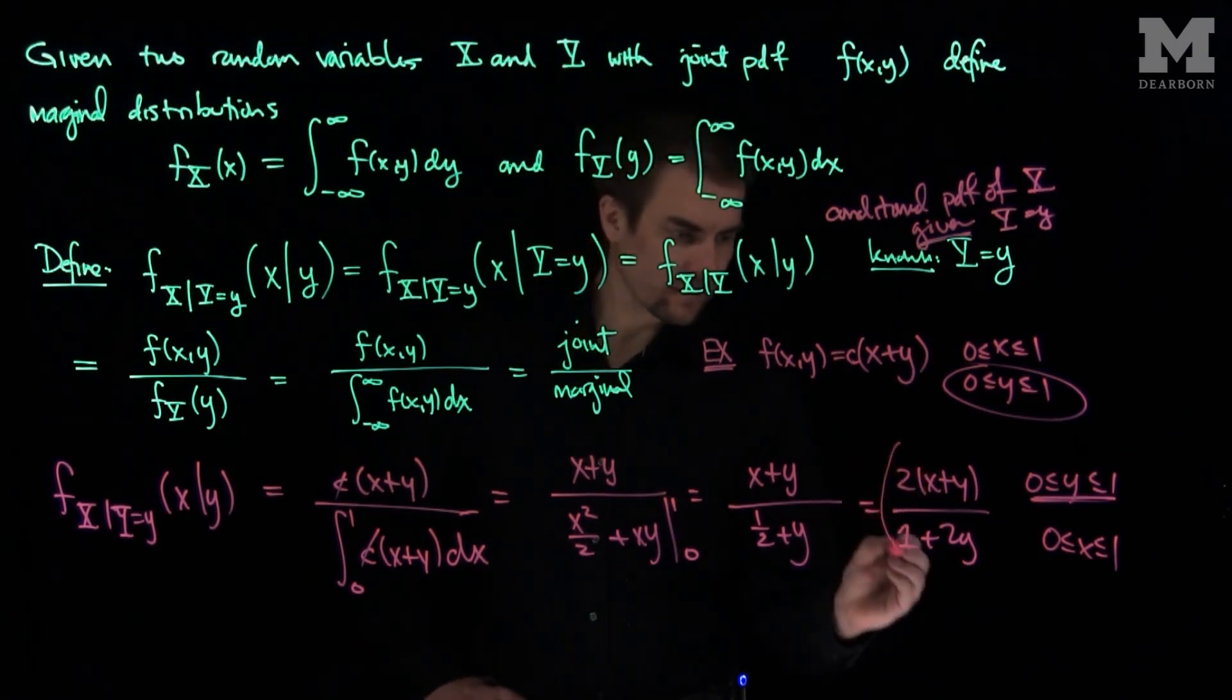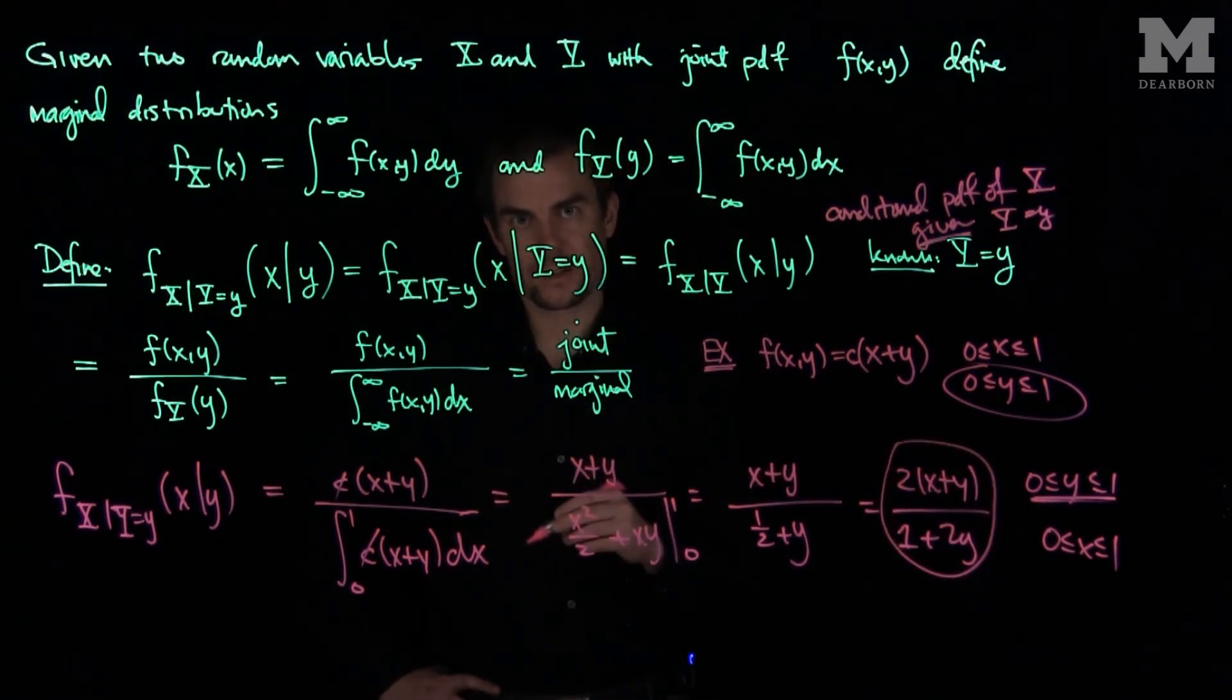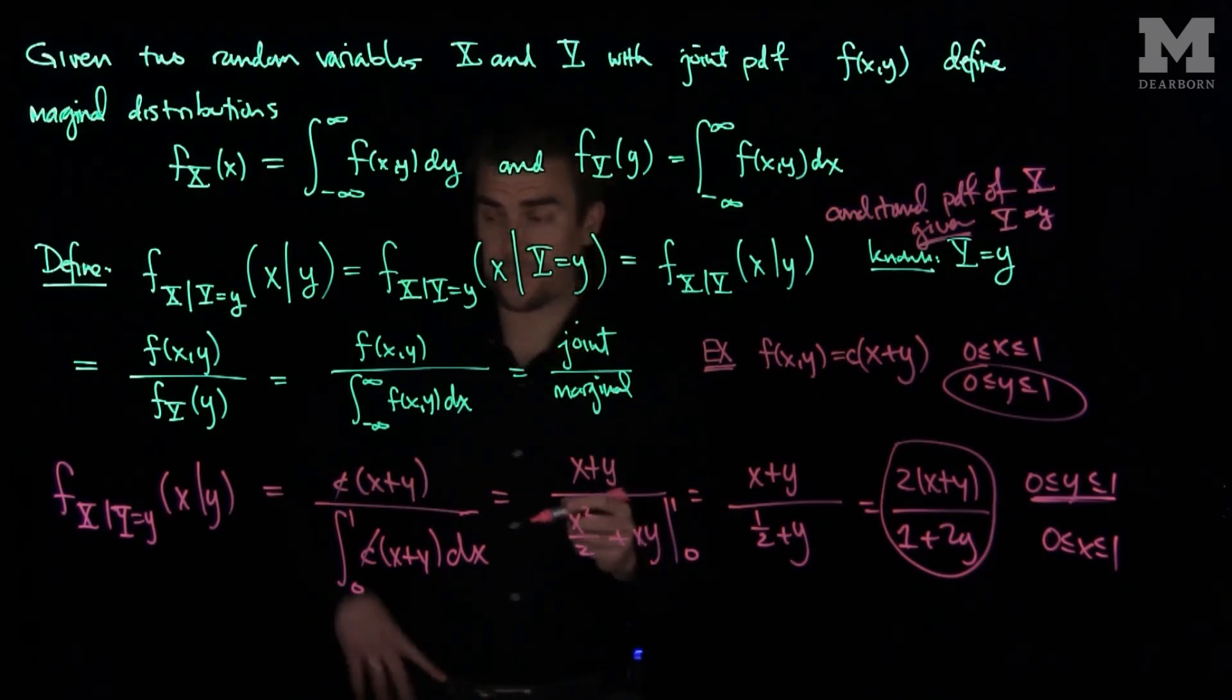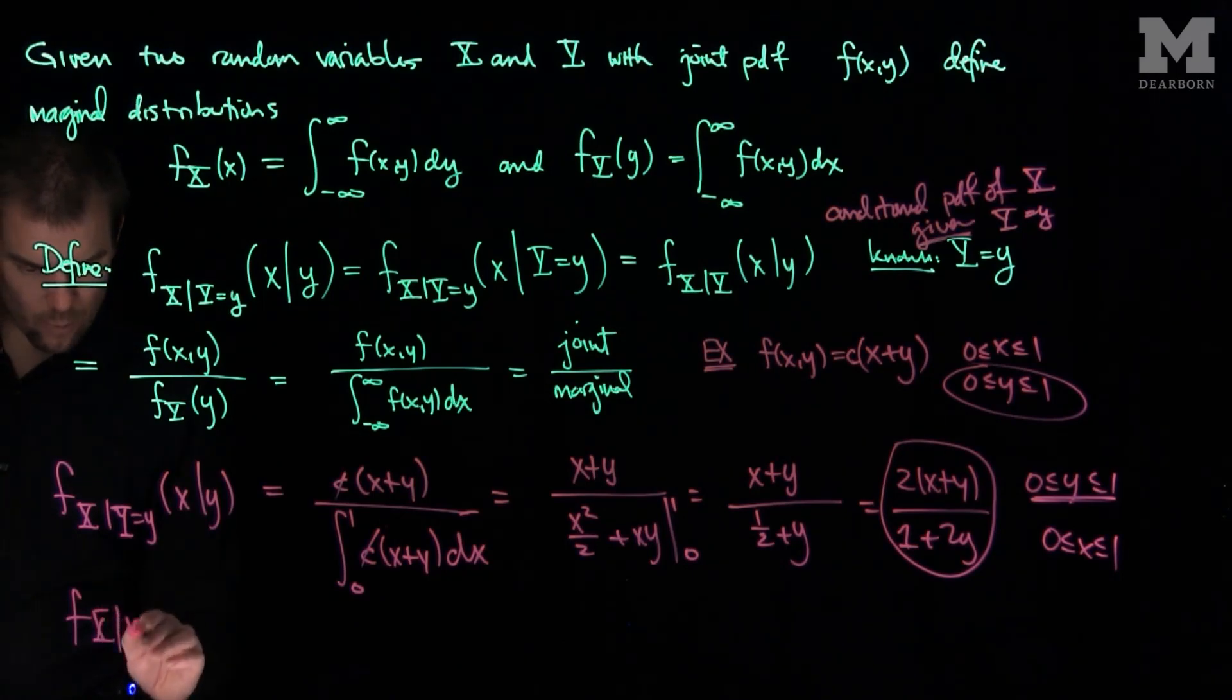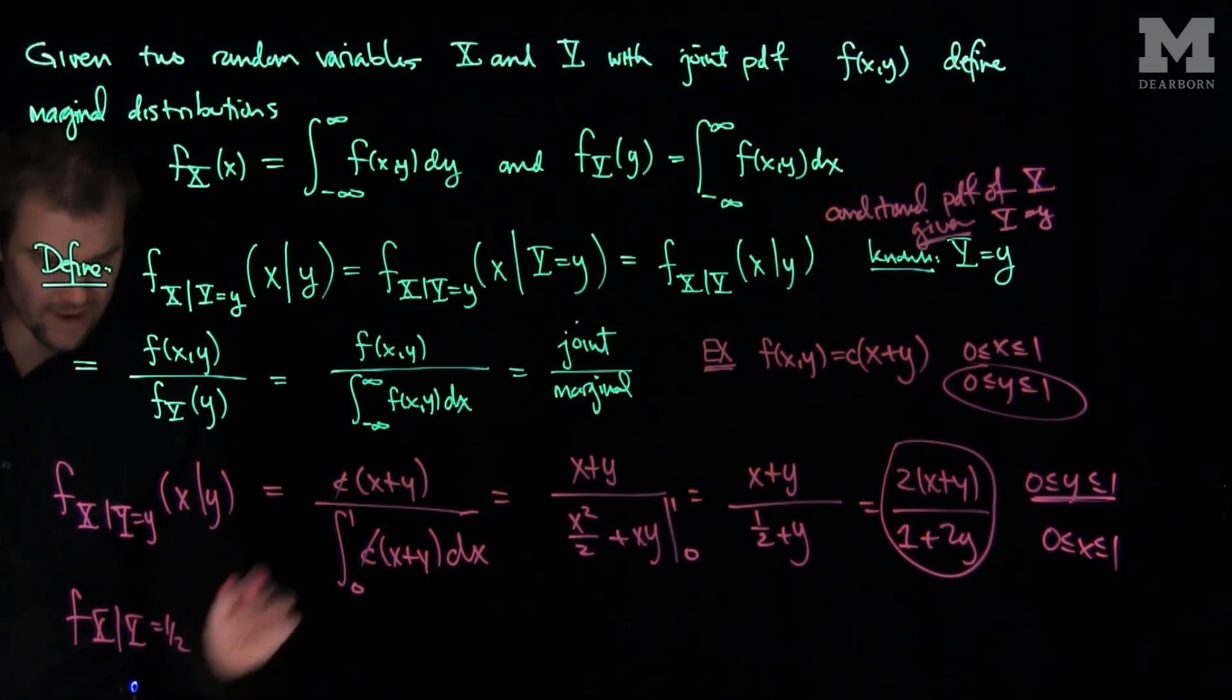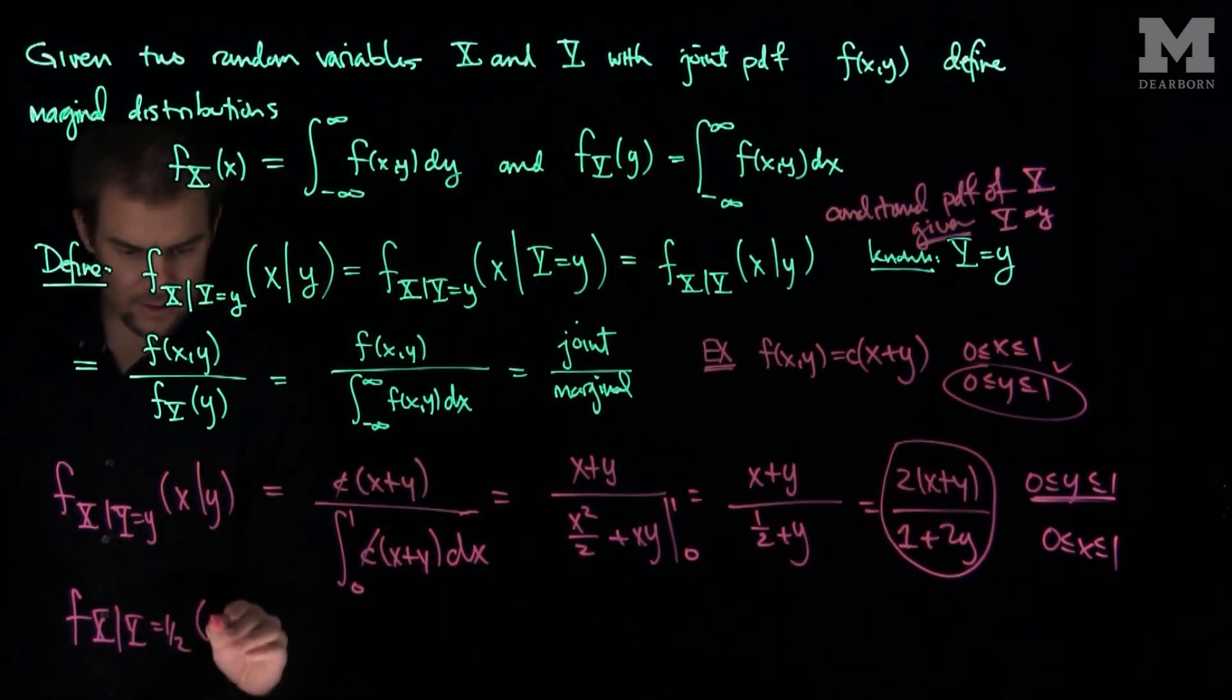So this function over here is your conditional probability density function of x, given that Y is equal to y. So what we'll oftentimes see is we'll see the f_{x|y} given that Y was equal to, say for example, one-half, one-half is the value of y which is allowed,